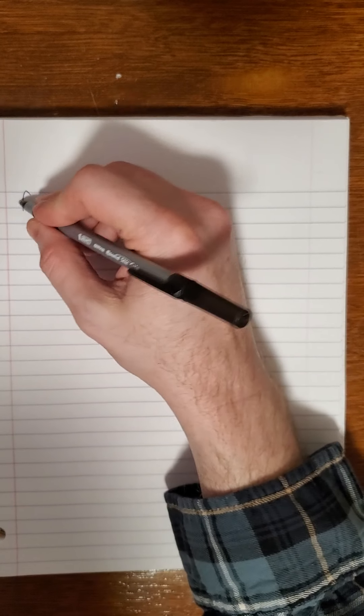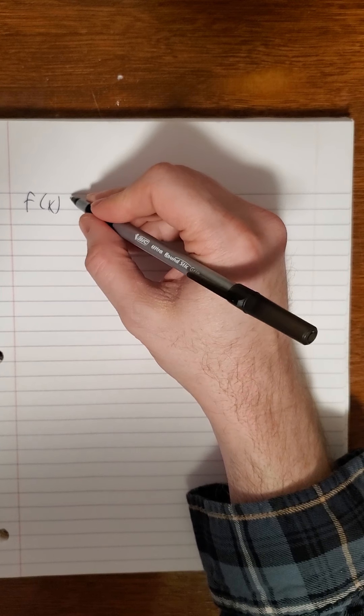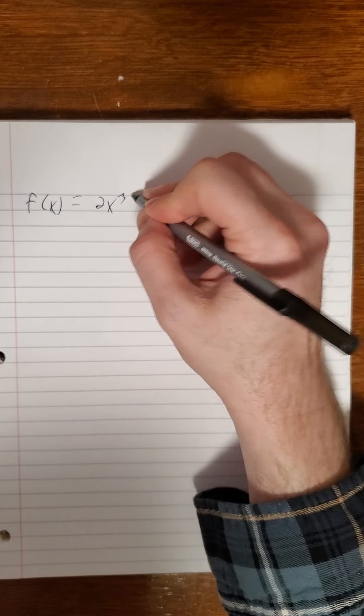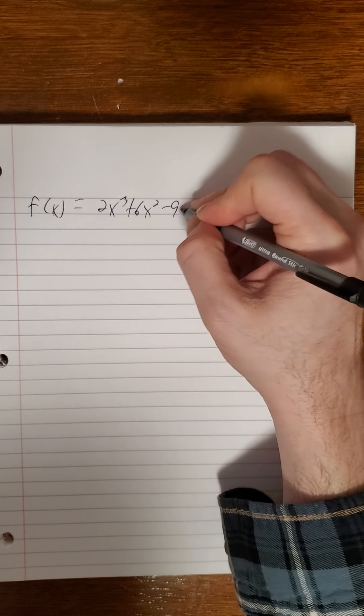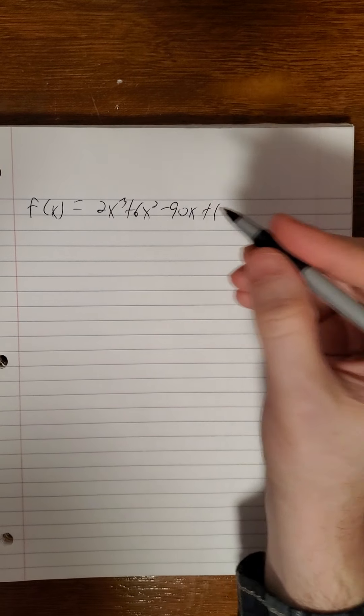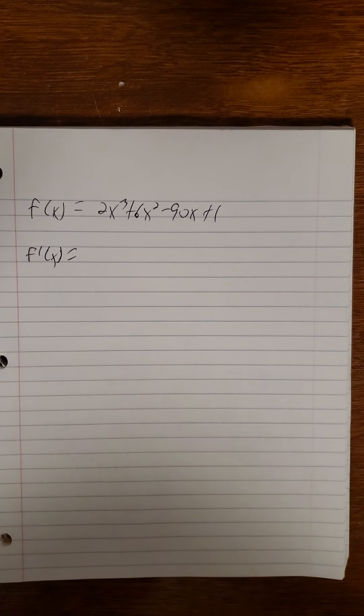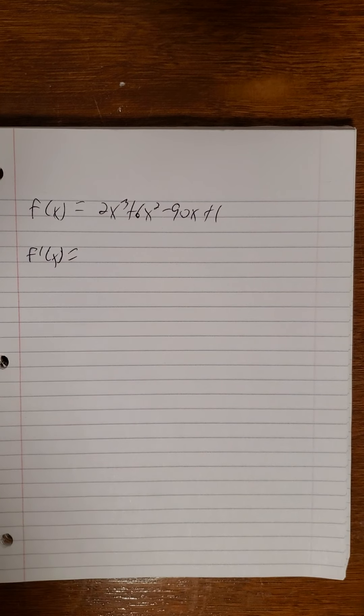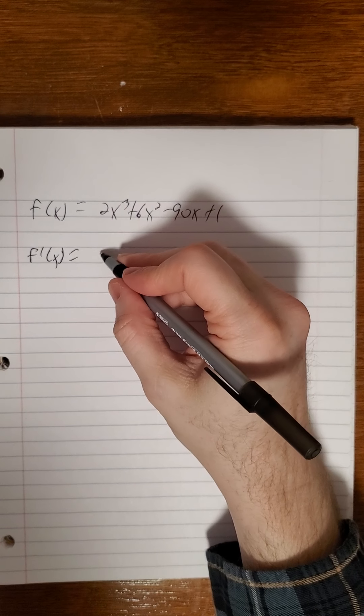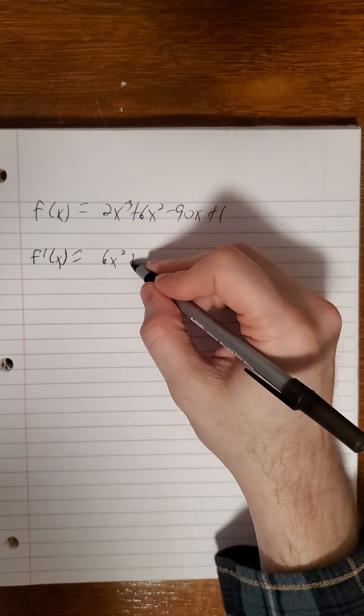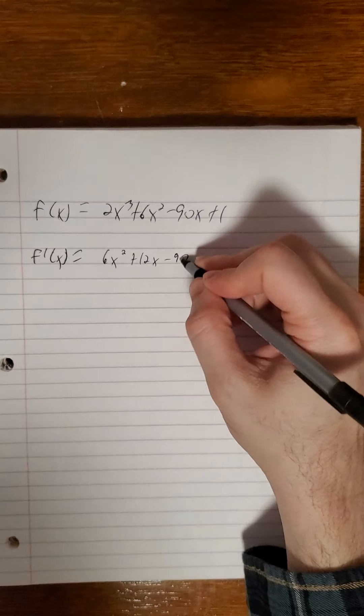Okay. So let's take a look at an example. So f of x, we'll go with 2x cubed plus 6x squared minus 90x plus 1. F prime of x. Go ahead and pause it and differentiate that. We'll welcome back. So 6x squared plus 12x minus 90.